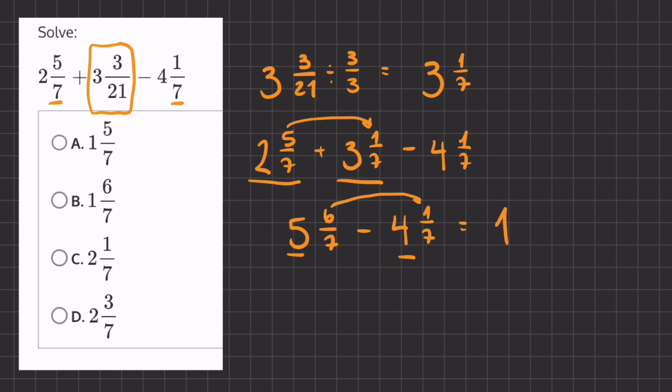And now we'll do 6 minus 1, which is going to give us 5, and we'll keep our common denominator of 7. So 1 and 5 sevenths will be our final answer.